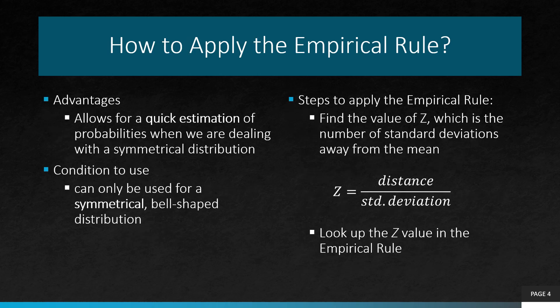Just like Chebyshev's theorem, the empirical rule allows for a quick estimation of probabilities, but it is specific for dealing with symmetrical distributions. To apply the empirical rule, the first thing we need to do is find the value of z, which is the number of standard deviations away from the mean. The formula is simply distance divided by standard deviation. Once we have the z value, we simply refer to what z corresponds to according to the empirical rule.